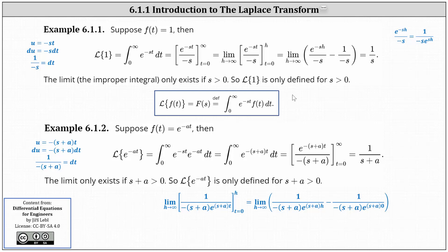Now let's find the Laplace transform of f of t equals e to the power of negative at. Applying the definition, we have the integral from zero to infinity of e to the power of negative st times e to the power of negative at dt. Because we have a common base, we add the exponents and factor out a negative, giving us an integrand of e to the power of negative the quantity s plus a times t. This requires u-substitution, where u equals negative the quantity s plus a times t, and dt equals one divided by negative the quantity s plus a, giving an antiderivative of e to the power of negative the quantity s plus a times t, all divided by negative the quantity s plus a.